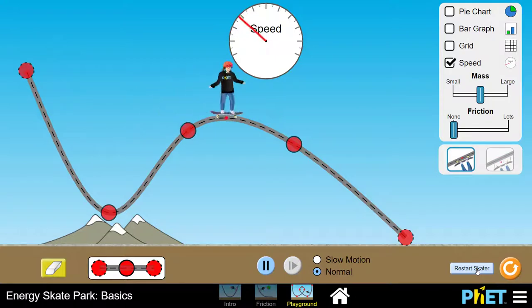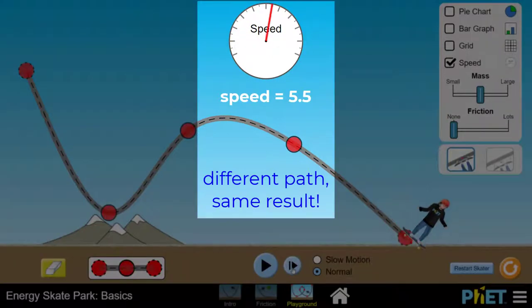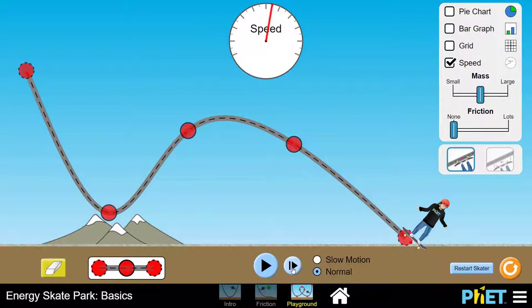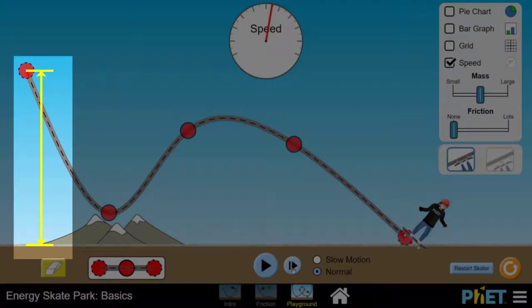Here's the same skater starting at the same initial height and also finishing at the same final height. Once again, keep your eye on the speedometer. The change in the skater's velocity is unchanged. This means the skater's change in kinetic energy is also unchanged. That's because the work done by the gravitational force only depends on the starting height and the final height. In other words, the work done by the gravitational force acting on the skater only depends on the vertical displacement vector.